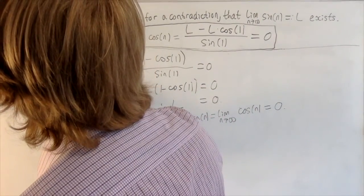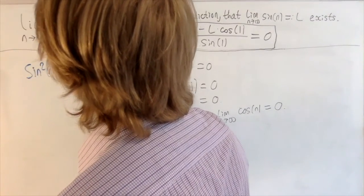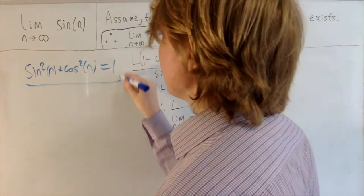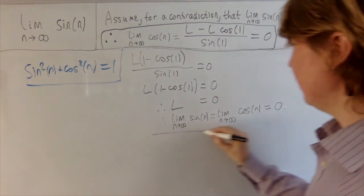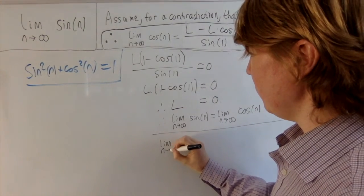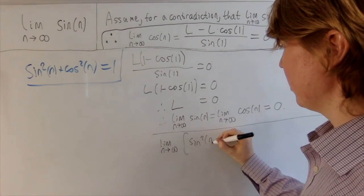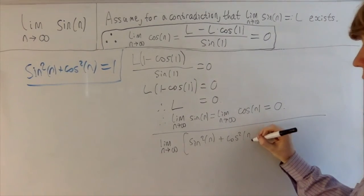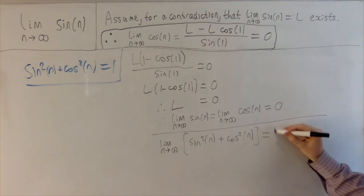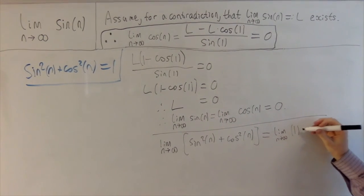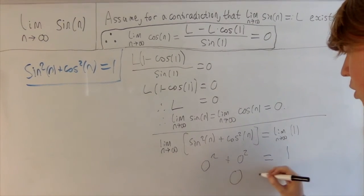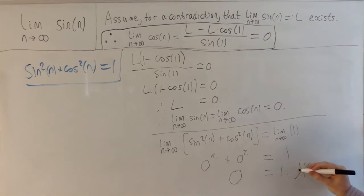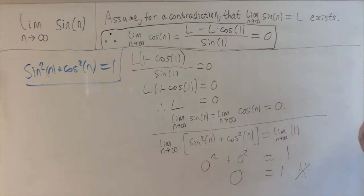We're almost ready to get a contradiction. We're going to make use of sin²(n) plus cos²(n) equals 1. If we take limits on both sides of this equation: sin²(n) converges to 0, and cos²(n) also converges to 0, but the limit of the constant 1 is just 1. So using algebra of limits, we get 0 squared plus 0 squared equals 1, giving 0 equals 1. This is of course a contradiction. So we've shown that if you assume the limit as n goes to infinity of sin(n) exists, you get a contradiction — you get 0 equals 1.